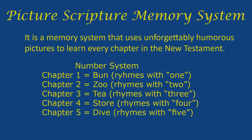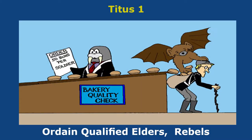That's our number system for the epistles that have five chapters. Titus chapter one: every chapter in the book of Titus will have a walrus with a tie on for Titus. Chapter one rhymes with bun. Ordain Qualified Elders — the order of buns represents ordain, the flying koala is putting buns into the back of the elderly man for qualified elders, and the confederate uniform the elder is wearing shows he is a rebel soldier.